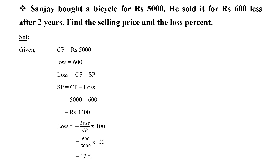A person bought a bicycle. He sold it for Rs. 600 less after 2 years. Find the selling price and the loss percent. CP is equal to 5000 and the loss is 600. SP is equal to CP minus loss, which is equal to Rs. 4400. Loss percentage is equal to loss divided by CP into 100, so 600 divided by 5000 into 100 gives us the loss percentage.